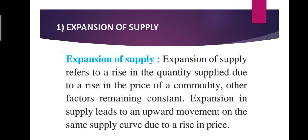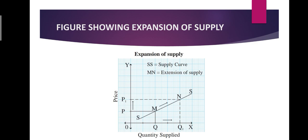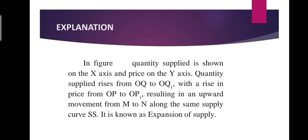In expansion of supply, we show that supply increases. Supply increases when price increases, and this is called expansion of supply. It is very important to remember that other things remain constant. So the movement of the supply curve will be upward on the same supply curve due to the rising price. SS is the supply curve and MN denotes the expansion of supply.